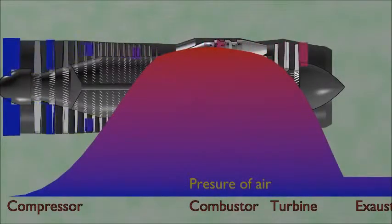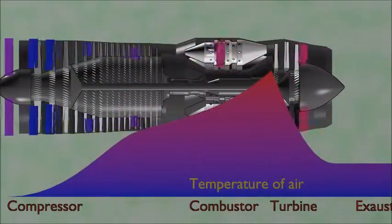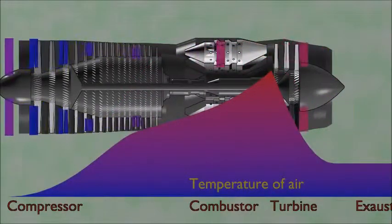This is a basic turbojet engine. The speed, size, and color of the bars represent the speed, volume, and temperature of the air going through the engine.